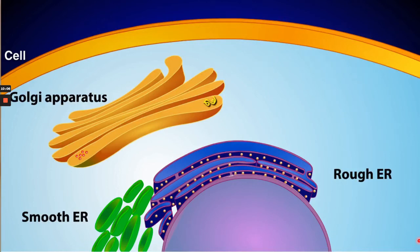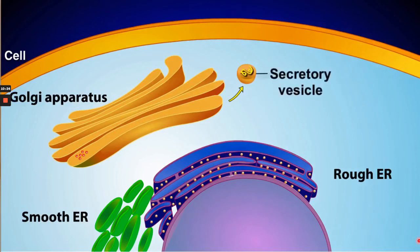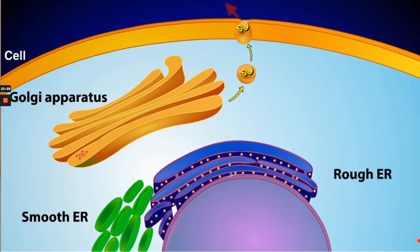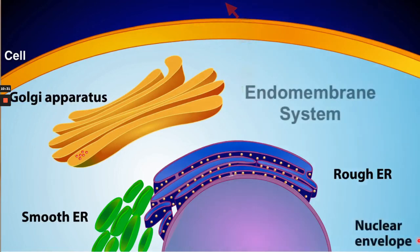Other cell materials leaving the Golgi apparatus may be destined for secretion from the cell. For example, some might be hormones that help with body regulation, while others might be proteins that become part of the materials surrounding the cell. Before these products can be exported, they must first be packaged into a secretory vesicle, which then merges with the plasma membrane, releasing its contents into the external environment.